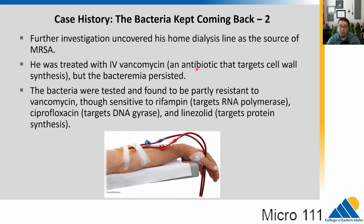They start IV vancomycin, an antibiotic targeting the cell wall of bacteria. But the bacteremia does not go away — worrying. They go back to the drawing board. In the background, the bacteria have been tested against different antibiotics. They find it is partly resistant to vancomycin, which is why it's not working. It is sensitive to rifampin, which targets RNA polymerase, and ciprofloxacin, which targets DNA gyrase. Linezolid targets protein synthesis. So there are three antibiotic options available.